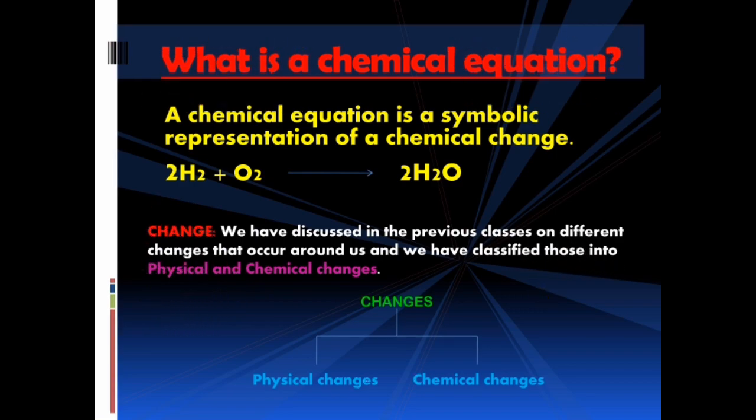A chemical equation is a symbolic representation of a chemical change. That means we use symbols of atoms, elements and compounds to denote the chemical change in the form of an equation. You can see on the screen a symbolic representation of a chemical change that takes place between hydrogen and oxygen to give water. That is: 2H₂ + O₂ → 2H₂O.